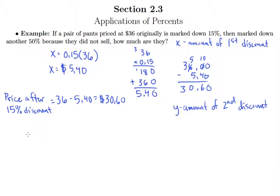So we know that y should equal 50% of 30.6, and so we just need to multiply those. We get 15.30, so y equals $15.30.